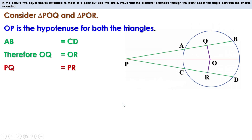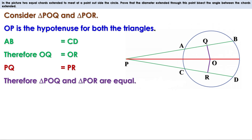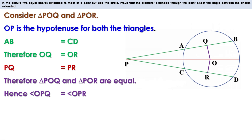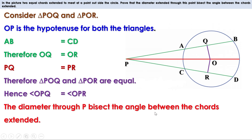That means PQ equals PR. So we can see that the three sides of triangle POQ are equal to the three sides of triangle POR. That means these two triangles are congruent. When two triangles are equal, the angles opposite to equal sides are equal. These two sides are equal, therefore the angles opposite to them are also equal. Therefore we can say this line — the line obtained by extending the diameter through this point — bisects the angle between the chords extended.